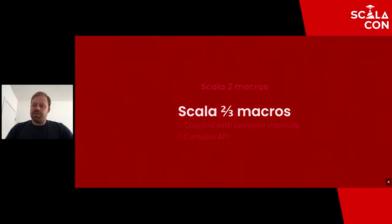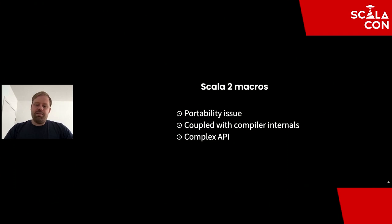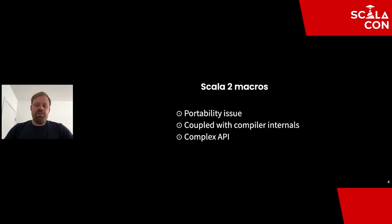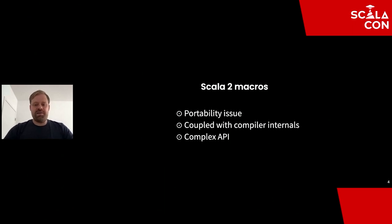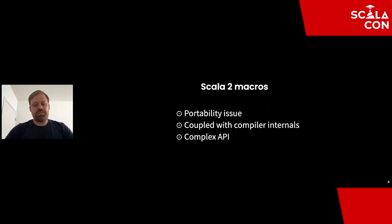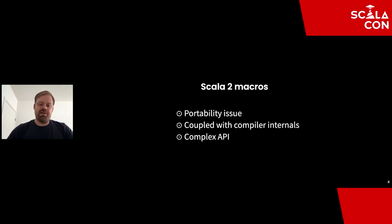Scala 2 and 3 macros changed because we had design issues with Scala 2 macros. The first problem was we couldn't port them easily to the new compiler, partly because the architecture of Scala 2 macros was tightly coupled with the internals of the Scala 2 compiler. So it proved impossible to reuse the same macro system. Another issue was that because it's tightly coupled with compiler internals, it's a quite complex API, so we wanted to provide something simpler.